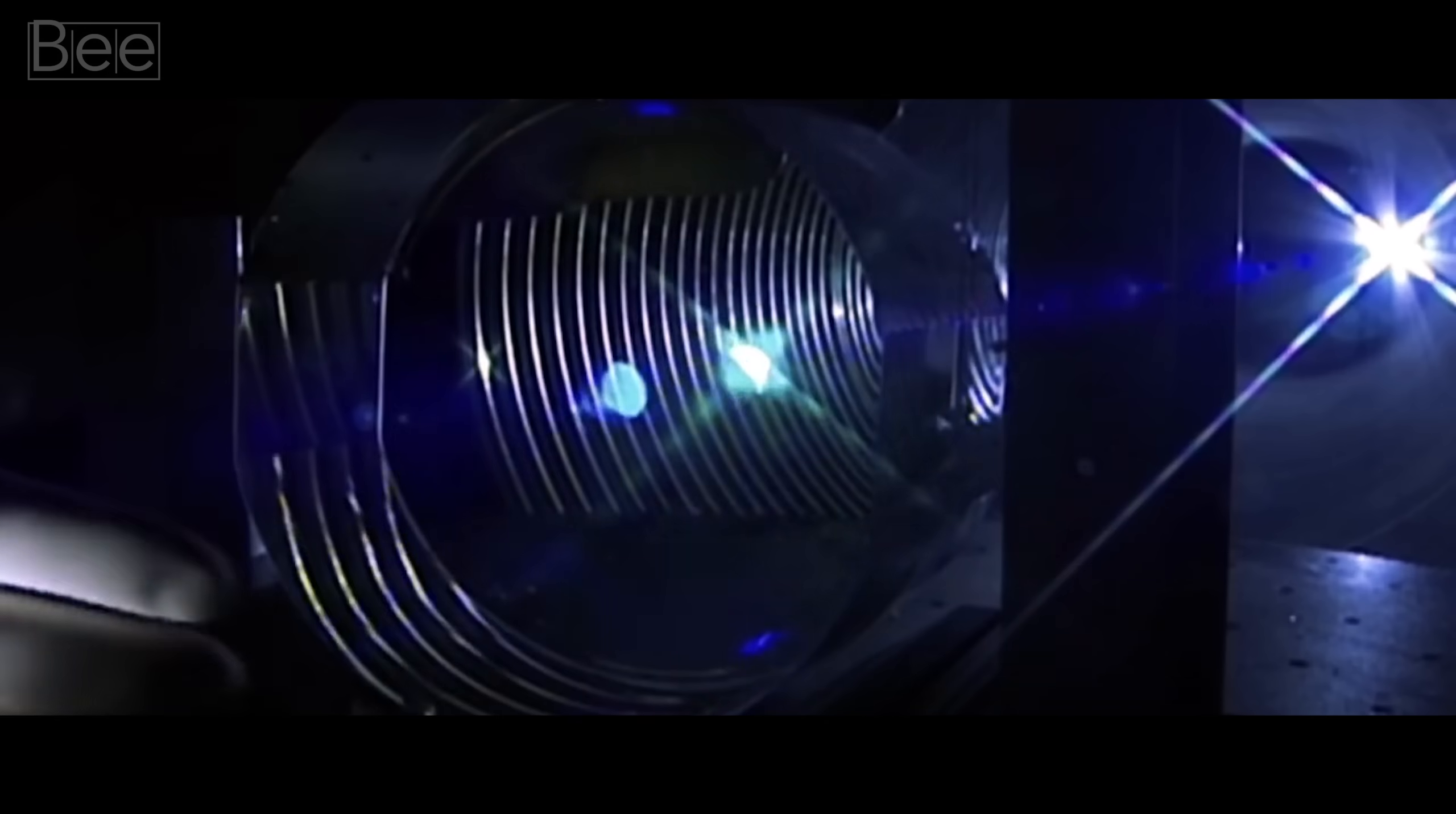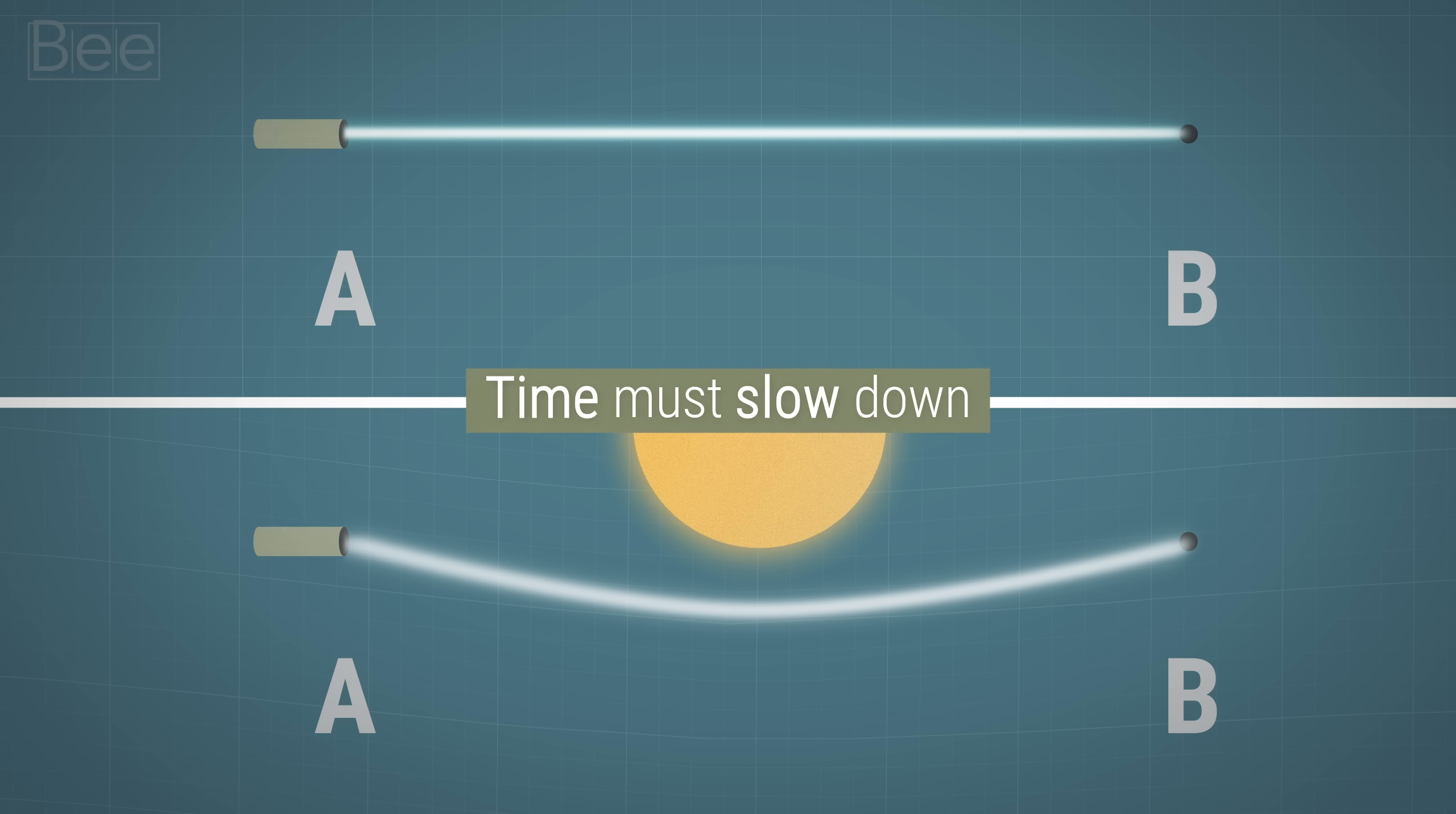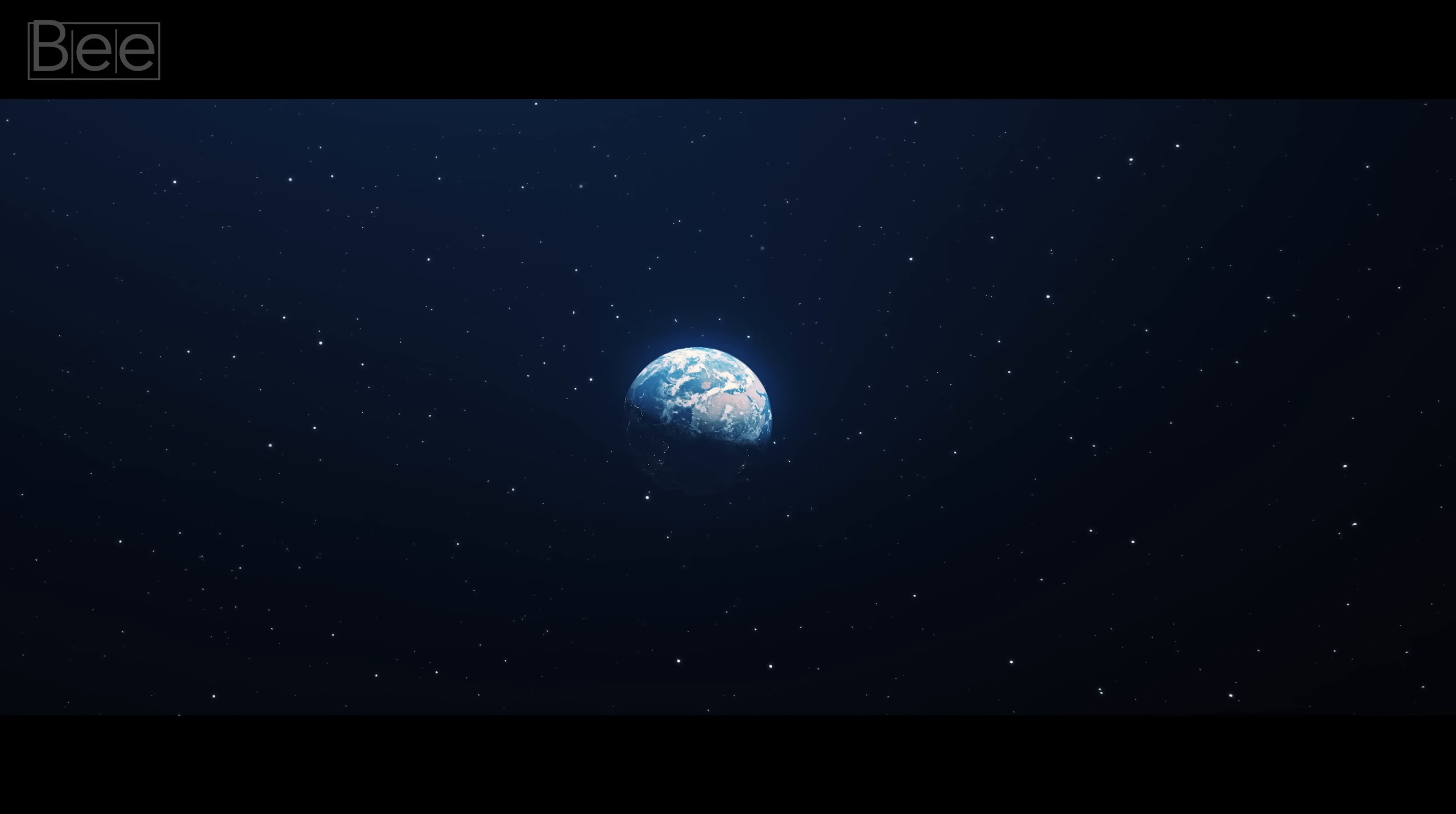But that concept violates the theory of special relativity, which says that the speed of light is independent of the frame of reference. This means that regardless of whether the light beam is traveling freely or under the gravitational field, it must take the same time for it to travel from A to B. So, for special relativity to be valid, time must slow down.